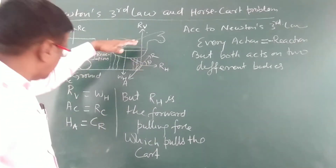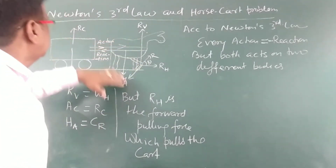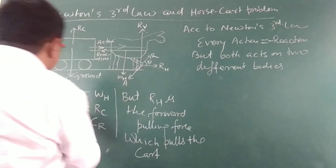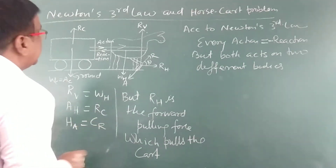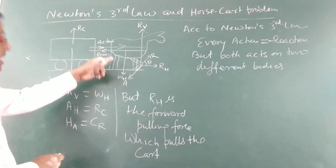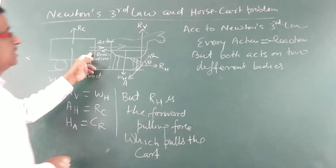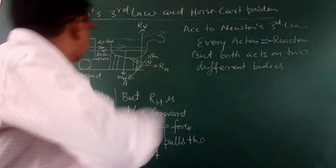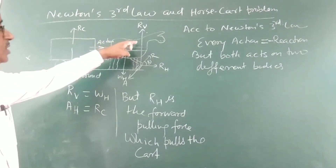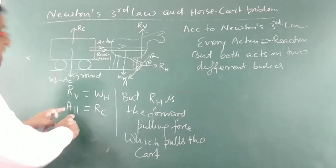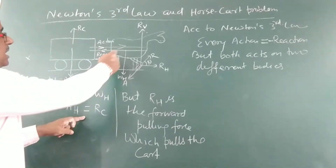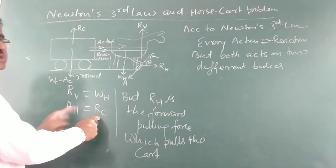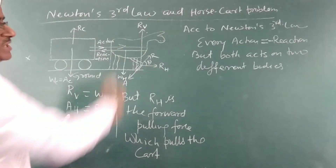The action is done by the horse, so we write: action by the horse. And the reaction is applied on the horse by the cart. These two are equal and opposite, according to Newton's third law.